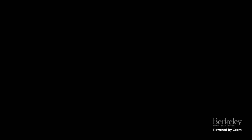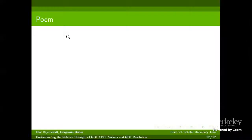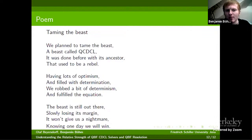Benjamin presents his poem, 'Taming the Beast': 'We planned to tame the beast, a beast called QCDCL. It was done before with its ancestor that used to be a rebel. Having lots of optimism and filled with determination, we robbed a bit of determinism and fulfilled the equation. The beast is still out there, slowly losing its margin. It won't give us a nightmare knowing one day we will win.'